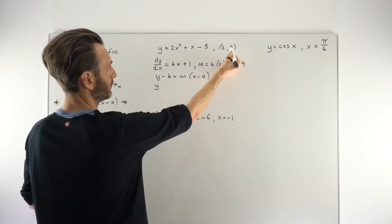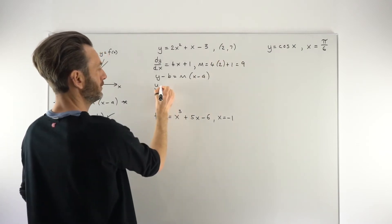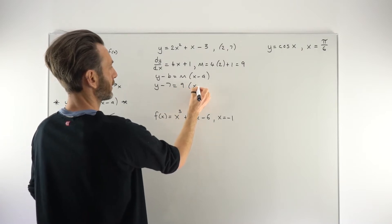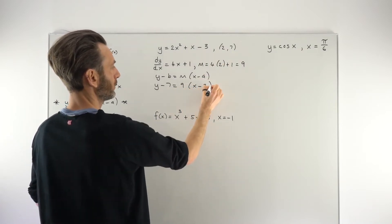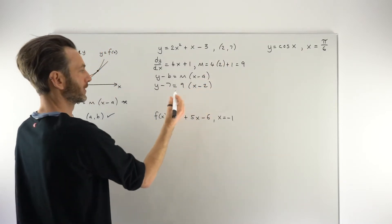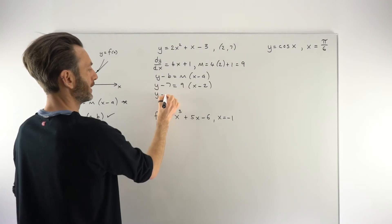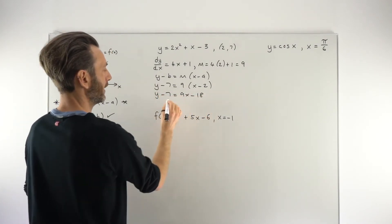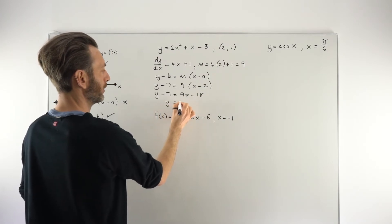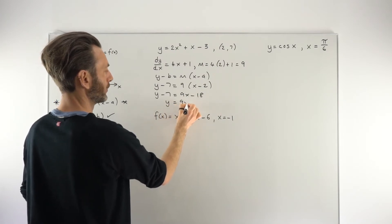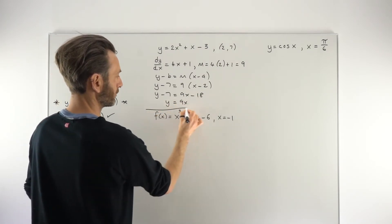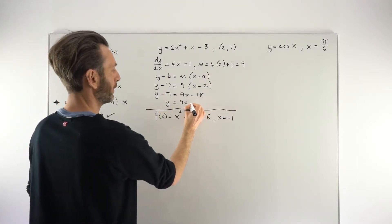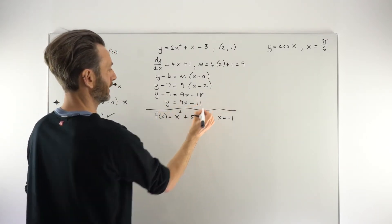So y minus 7 equals 9 times x minus 2. We get y minus 7 equals 9x minus 18, and then just tidying up: y equals 9x, adding 7 to both sides gives us y equals 9x minus 11.